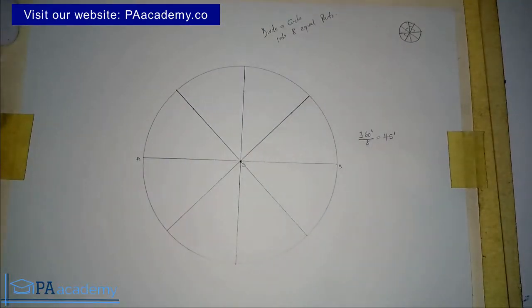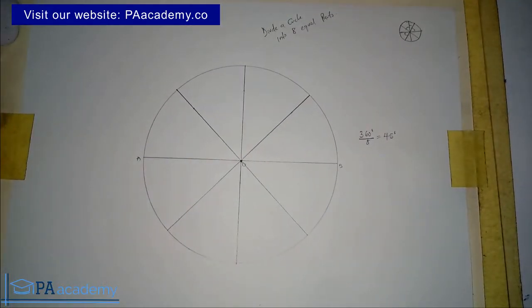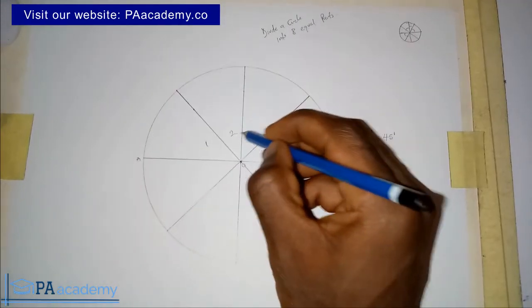With this now, we already have our circle divided into eight equal parts. This is one, two, three, four, five, six, seven, and then eight.